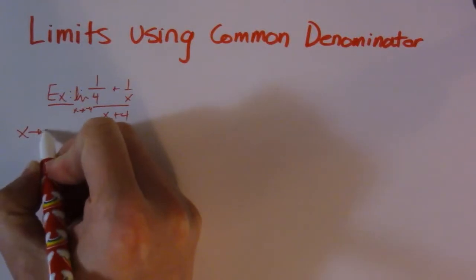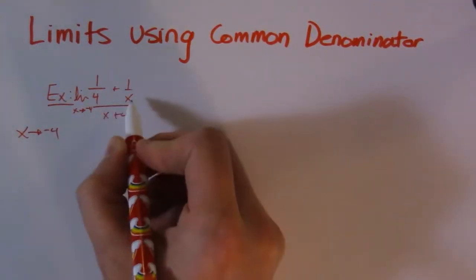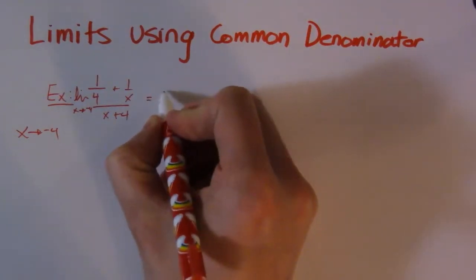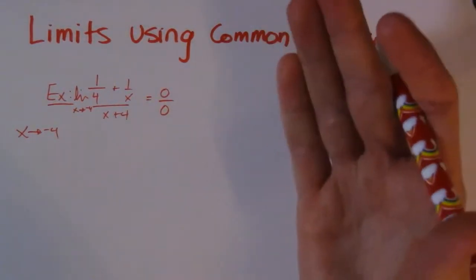x goes to negative 4. So if I sub negative 4 into this, what ends up happening is I get 0 over 0. So basically that means we have to do something else.